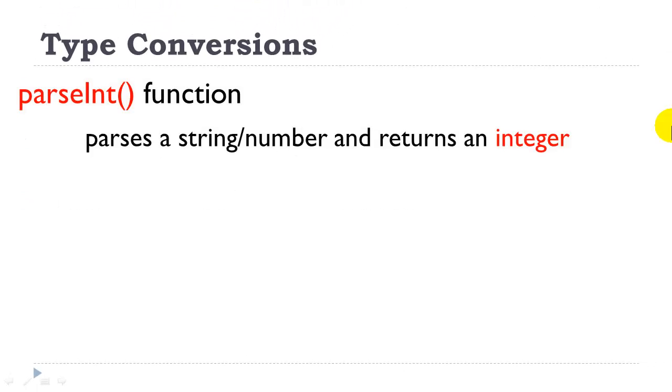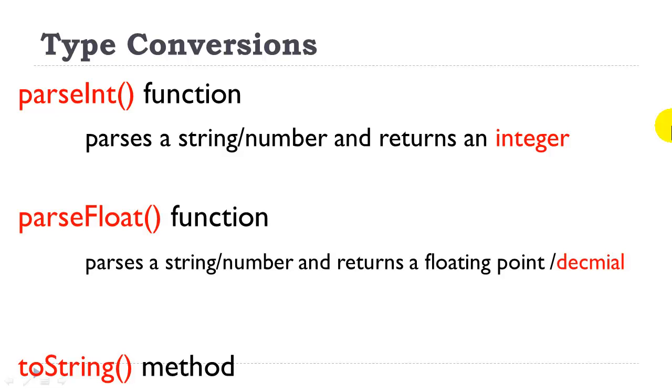Sometimes, in JavaScript, you need to convert from one type of data to another. The parseInt function, which is a function of the JavaScript language, parses a string or a number and returns an integer. The parseFloat function also parses that string or number and returns a floating point or decimal. We also have the toString method, which will convert a number into a string.